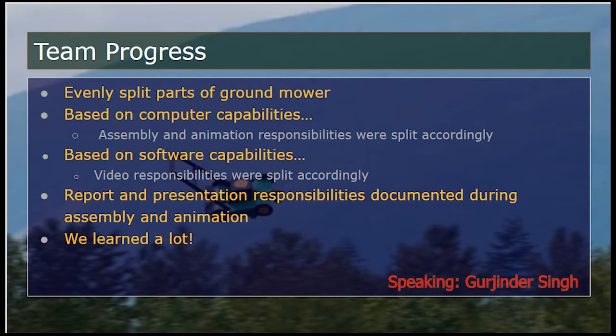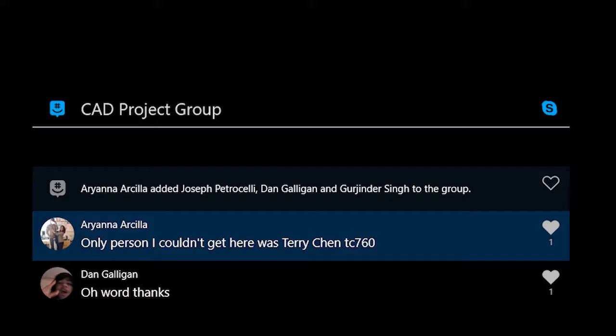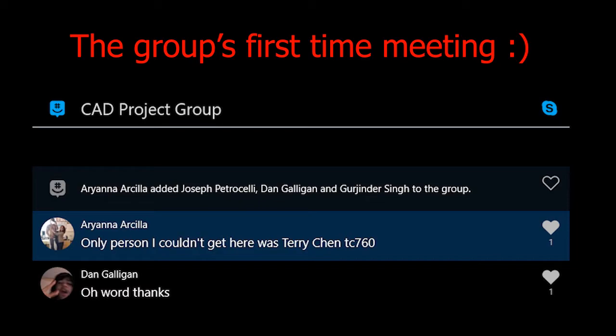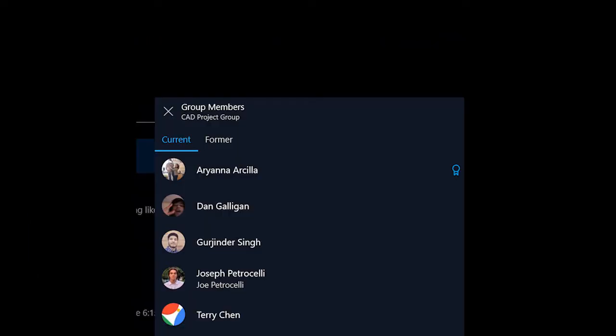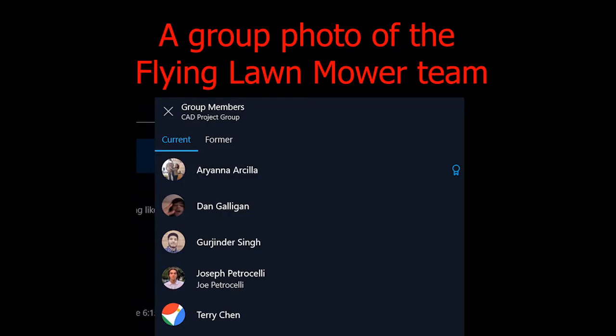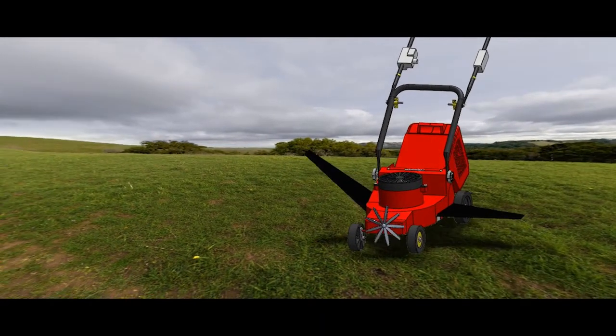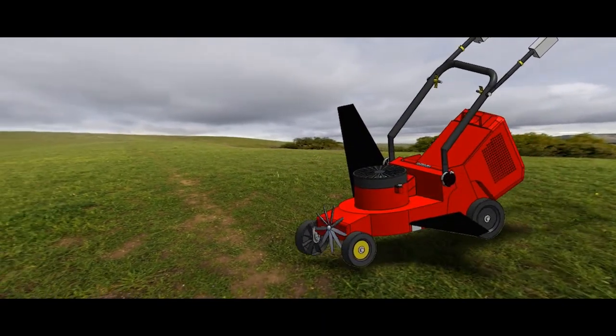In regards to our team progress, initially each component of the mower was split evenly amongst the group members where everyone got six to seven parts each. After recreating the parts on SOLIDWORKS, the assembly, animation, and video responsibilities were split accordingly depending on the computer and software capabilities of each member. The report and presentation responsibilities were documented during the assembly and animation of the project. Overall, we learned a lot and had a lot of fun recreating the object and the additional parts that we added to it.